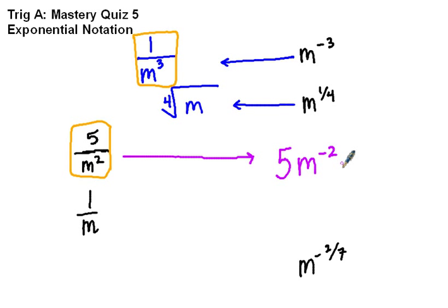Next one. This one is also a similar problem. Again, this m, we're going to put it to a negative power, but negative what? Well, the variable here is 1. So it's negative first power. You can write the 1 on there or not, it's the same.